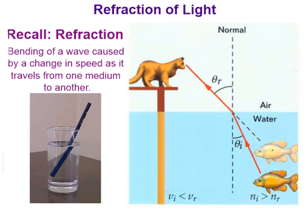Refraction is the bending of a wave caused by a change in speed as it travels from one medium to another. When we have light traveling from the medium of water to the eye of this cat, it is reflected light being reflected off of this fish and traveling back to the eye of that cat. It bends as it travels from the water to the air because it is changing speed — light travels at a different speed in water than in air.